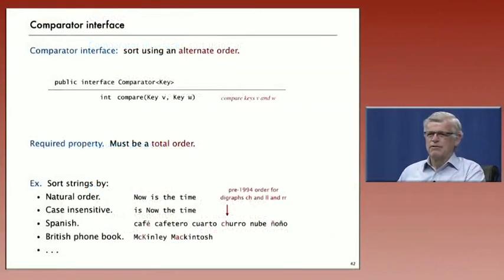The comparator interface just says that it's going to implement a method compare that compares two different keys of a given type, of the generic type. Again, it has to be a total order, and this is very familiar, for example, with strings. There's many different ways that we might want to sort strings. We might want to use the natural alphabetic order, or we might want to make it case insensitive, or maybe there's different languages that have different rules of the ordering. We're sorting strings, but we're implementing a different ordering, various different orderings, on that same data. That's what the comparator interface is for.